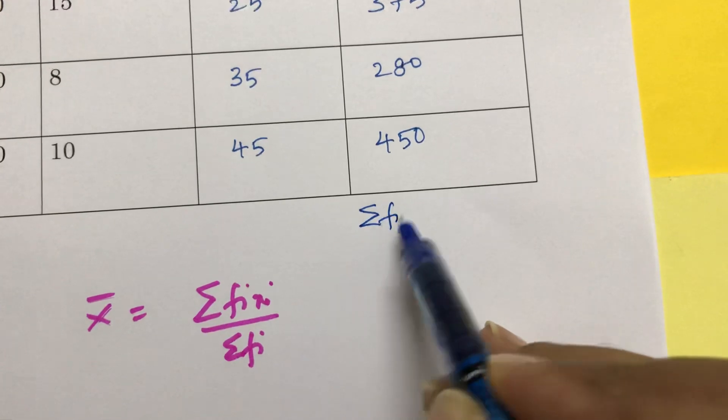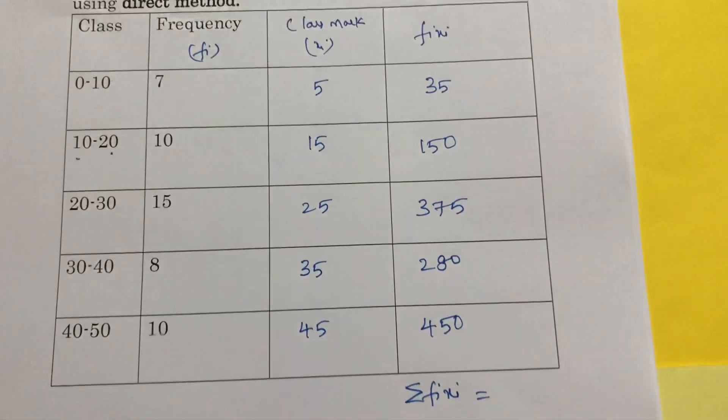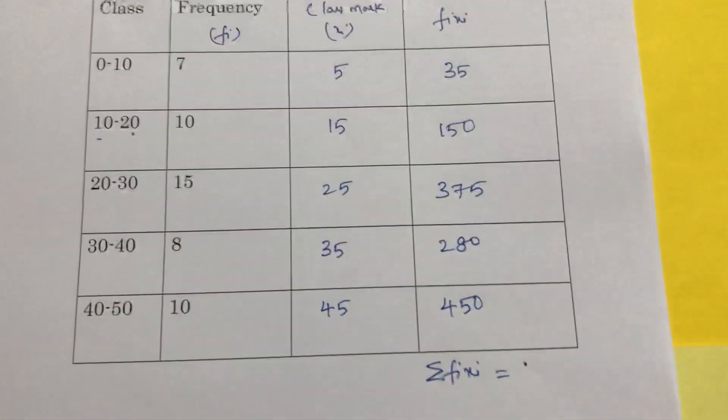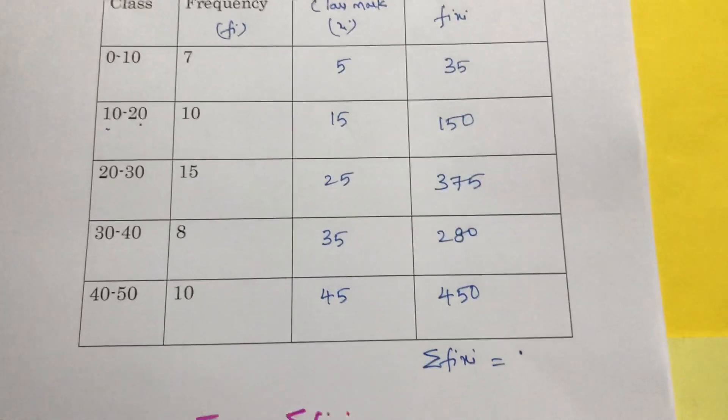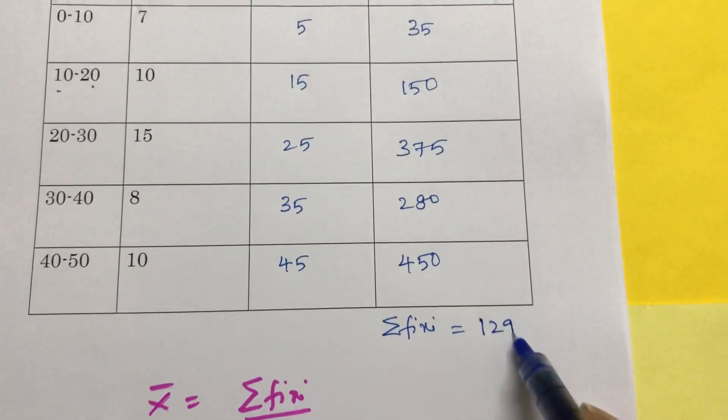So sigma fi xi: if you will add all these values, 450 plus 280, you will get 1290.